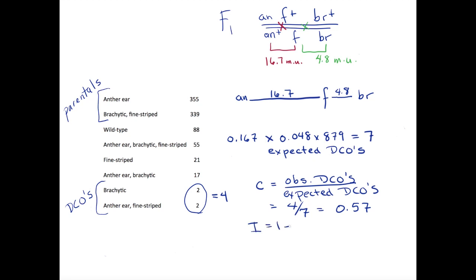Interference is defined as 1 minus the coefficient of coincidence. In our example, 1 minus 0.57 gives us 0.43, or 43%. This means that a crossover in one region of the chromosome reduces the probability of a crossover occurring simultaneously in a nearby region by 43%.